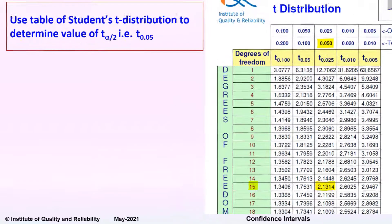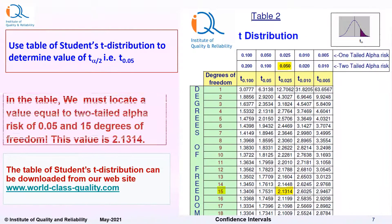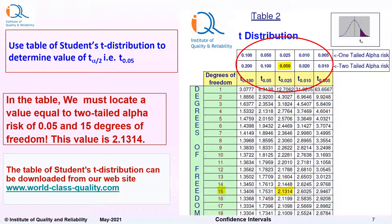This is the table of t distribution which can be downloaded from our website www.world-class-quality.com. In the table, we must locate a value equal to 2-tailed alpha risk of 0.05 and 15 degrees of freedom. This value is 2.1314.